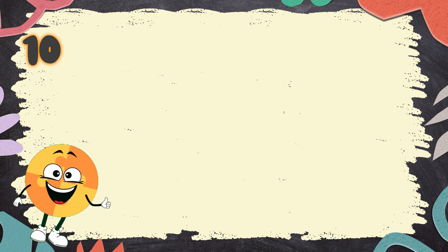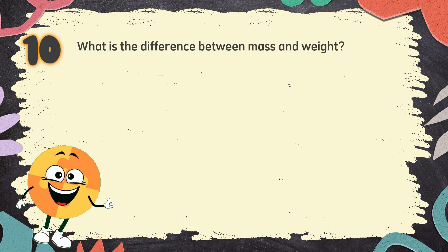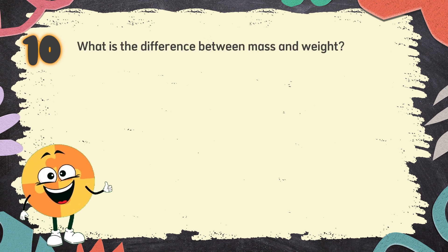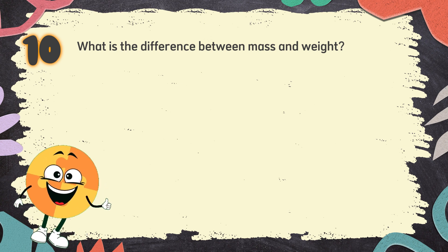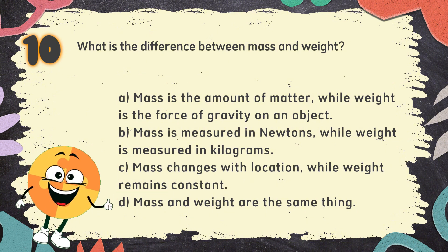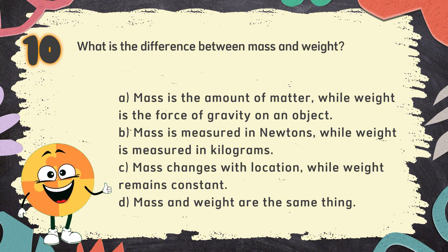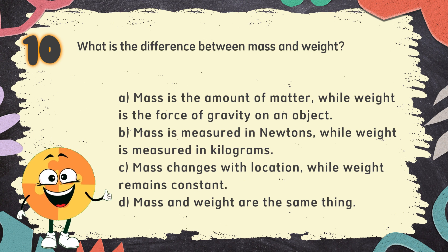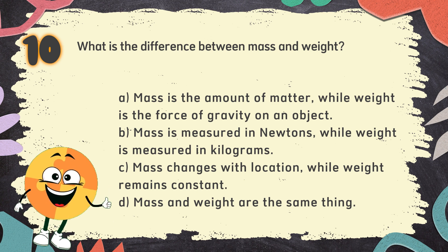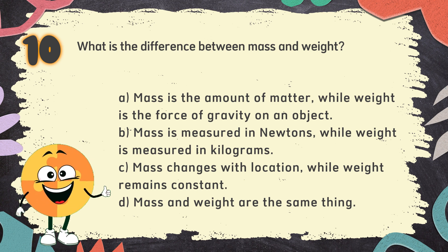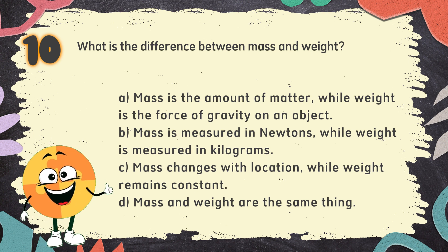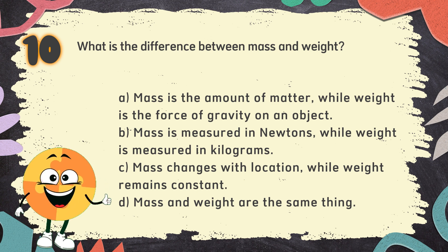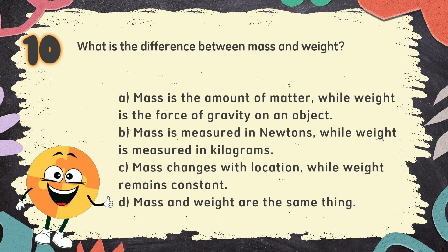Number 10. What is the difference between mass and weight? The choices are: A. Mass is the amount of matter, while weight is the force of gravity on an object. B. Mass is measured in newtons, while weight is measured in kilograms. C. Mass changes with location, while weight remains constant. D. Mass and weight are the same thing.